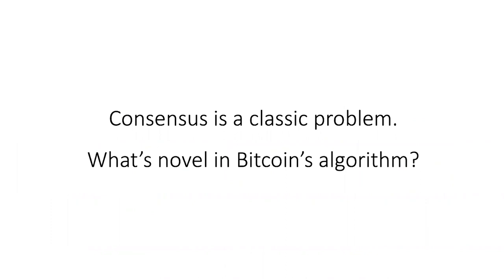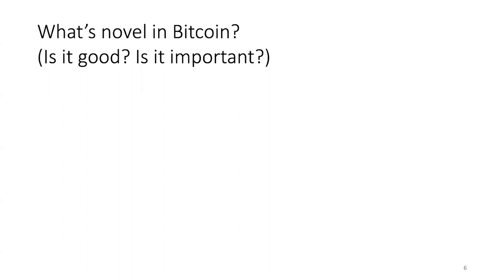The consensus problem has been around for at least four decades, so what's new about Bitcoin or the whole blockchain innovation? More importantly, it's not just about what's new — we should also ask whether the new features are good and important. Some new features may actually be drawbacks or limitations of Bitcoin, or they are nice but not as important as people think. So it's a good exercise to ask: what do people think is good, important, and novel in Bitcoin and blockchains?